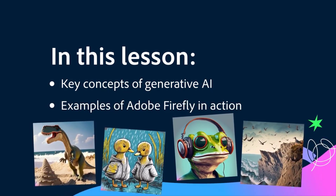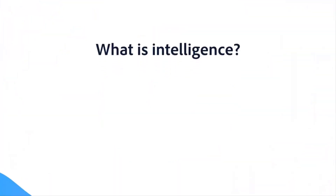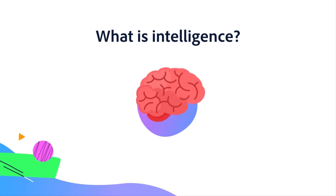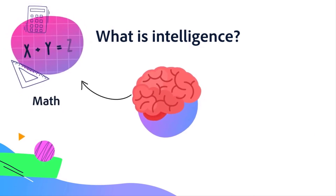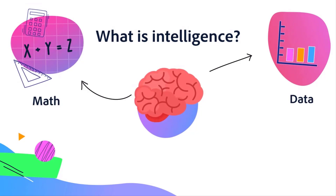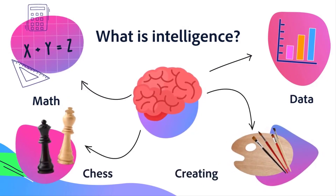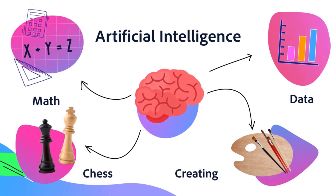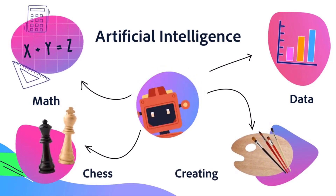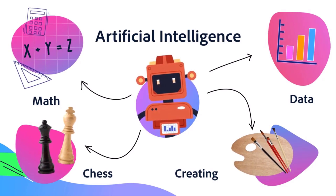You probably know that AI stands for artificial intelligence. Intelligence is usually associated with human tasks like doing math, remembering large amounts of data, playing chess, or creating things. Artificial intelligence is simply the name for when computers are able to do those kinds of intelligent tasks well.